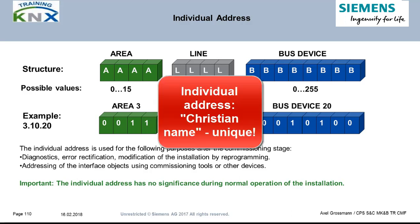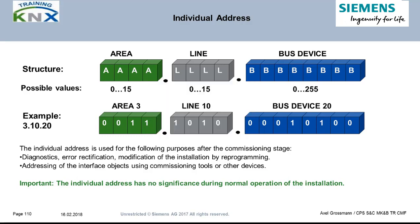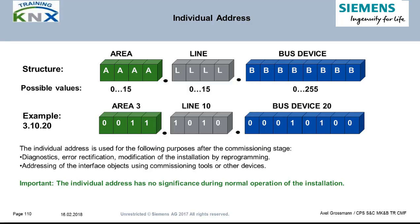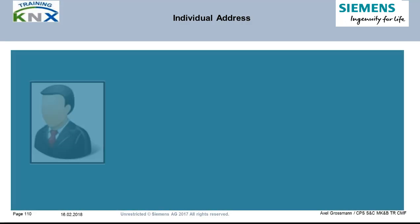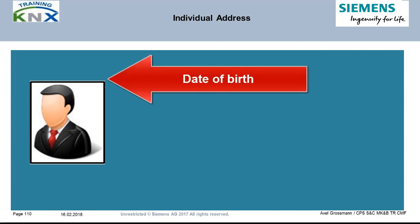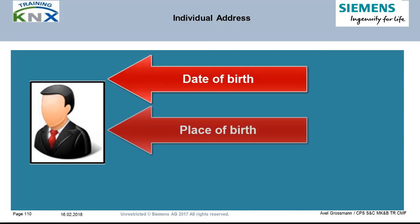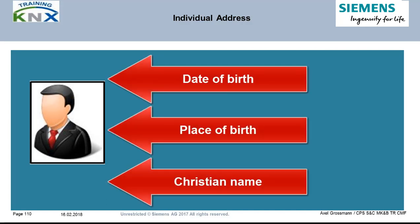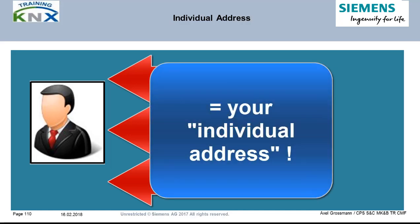Inside a project, the individual address must be unique — it is not allowed to use it several times for various bus couplers in the same system. Compare it to your own physical address: your day of birth, place of birth, and your Christian name are unique in the whole world, resembling your private individual address.